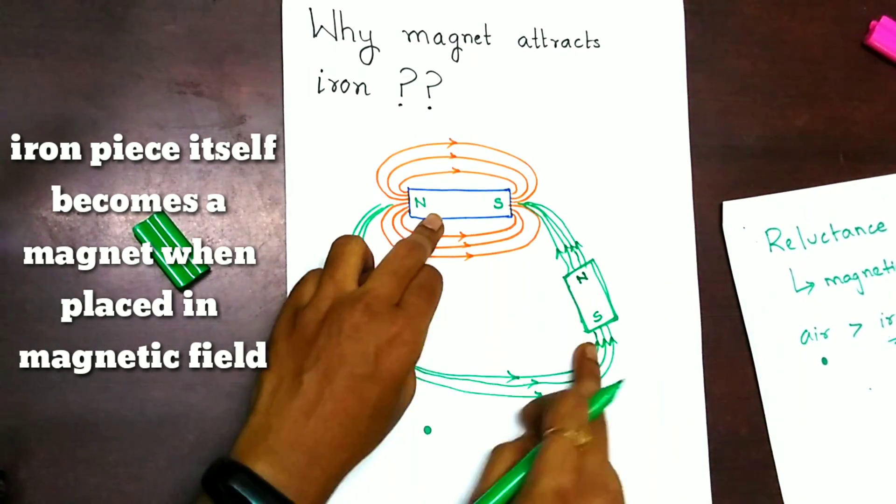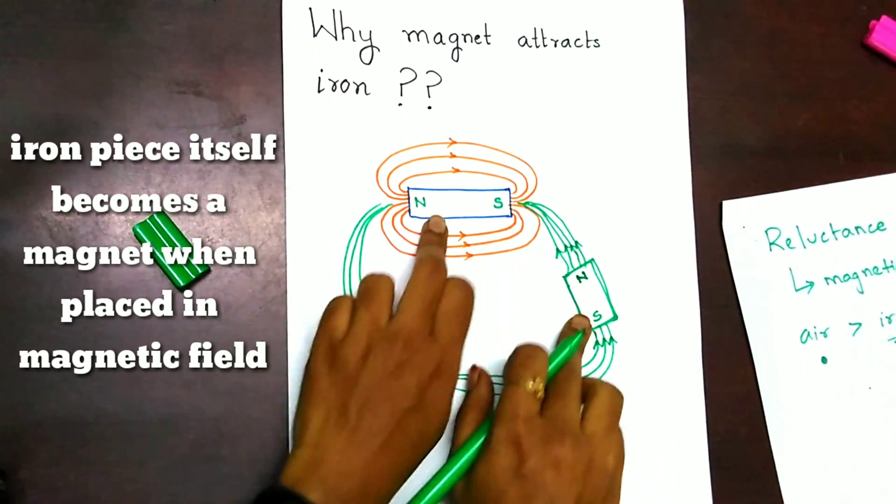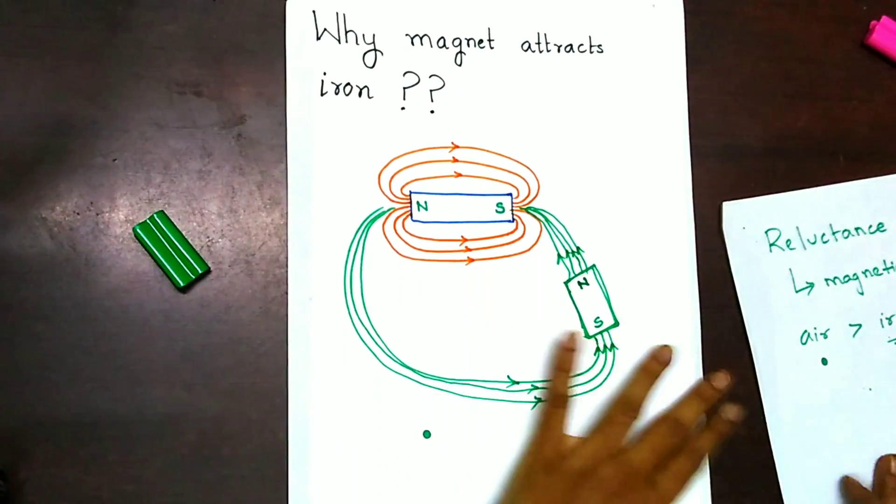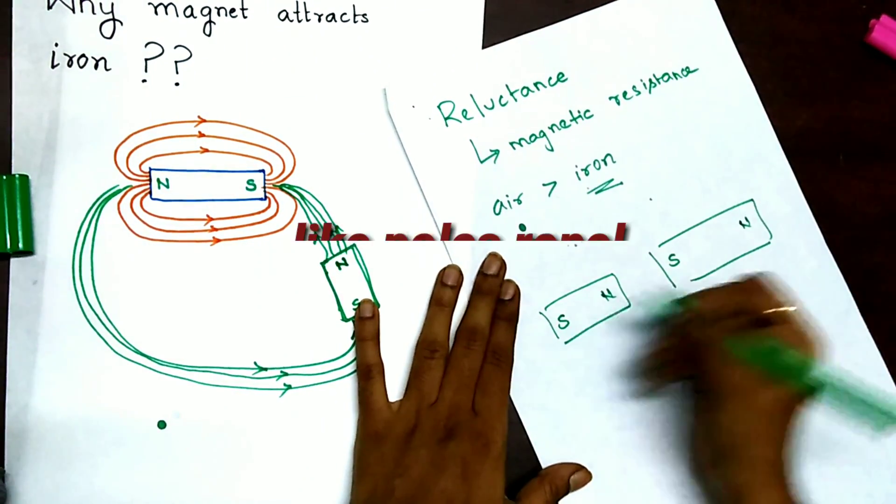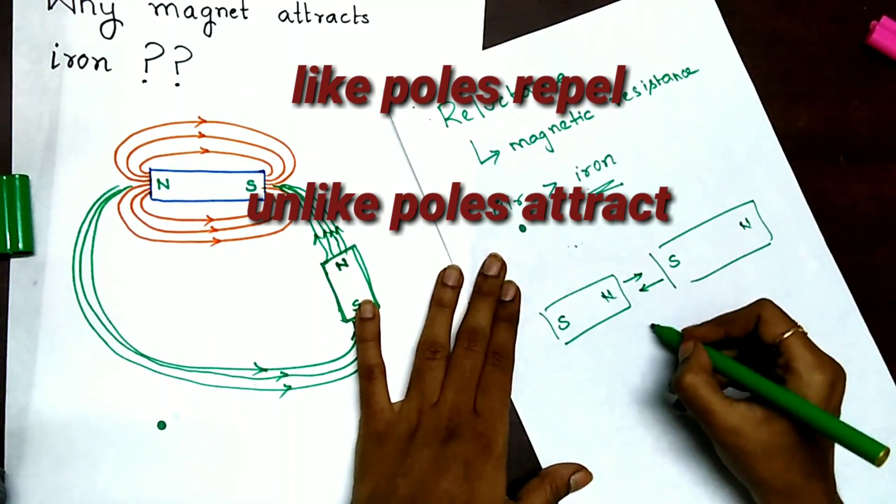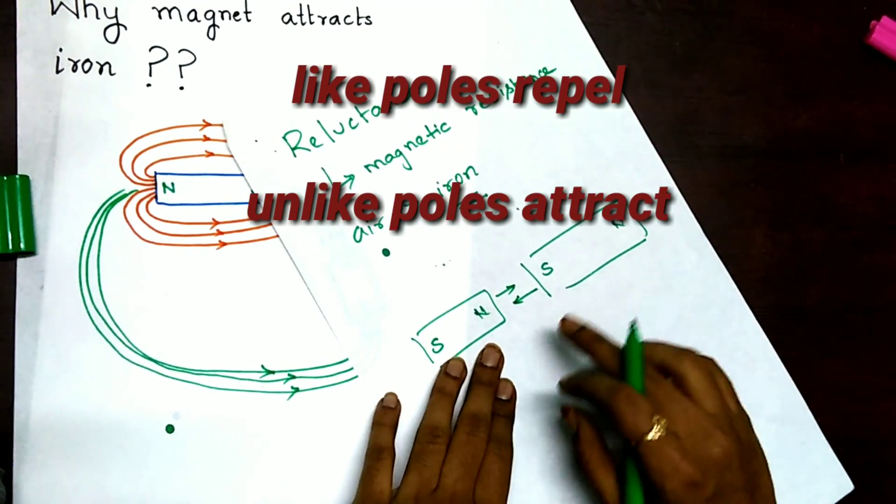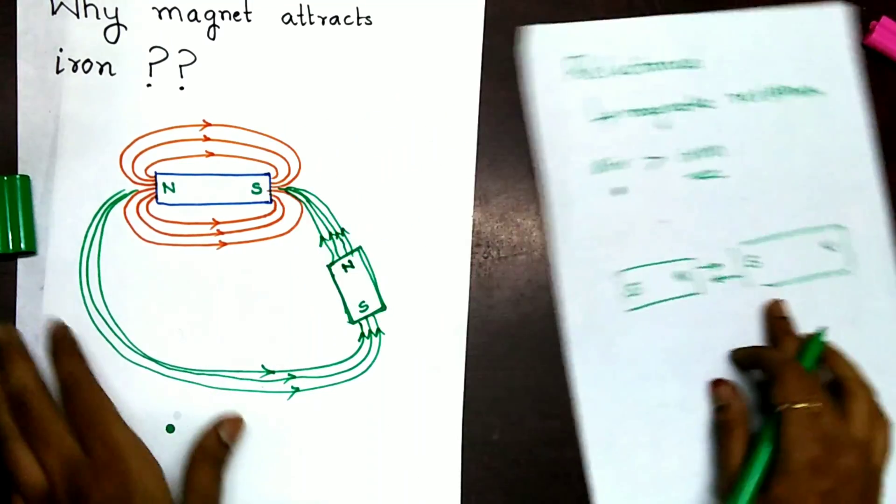Now, you can see that two magnets are placed beside each other. And you know the basic thing that whenever two magnets are placed this way, they attract towards each other. A force of attraction exists between them.